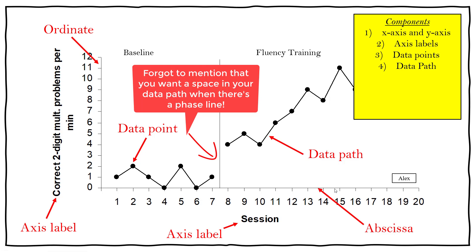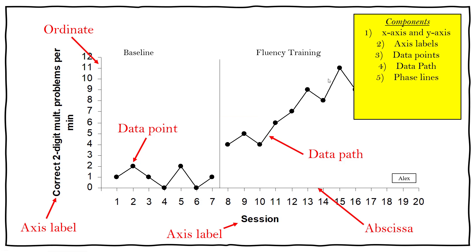You need a data path, which are the lines that connect your data points. The data path allows us to see the trend of the data and what direction the data are going. In the baseline phase the data are pretty level, but in the intervention phase you can really see there is an increase in the trend of the data.